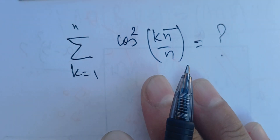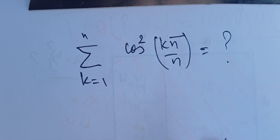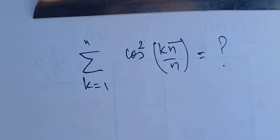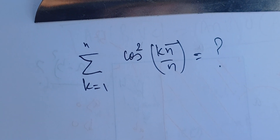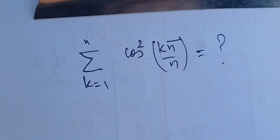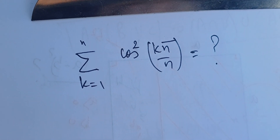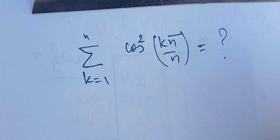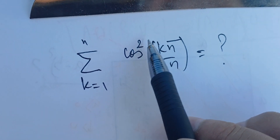Welcome back. In this video we're going to compute the sum of the squares of the cosine of kπ/n, with k changing between 1 and n. We can use complex analysis to help us a lot, and we can even simplify this problem further — we want to get rid of this square.